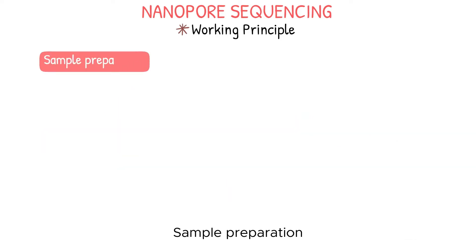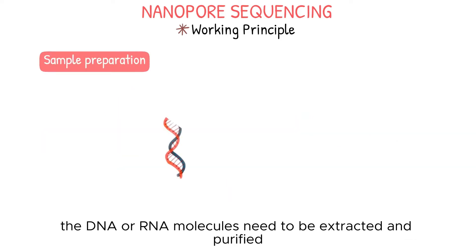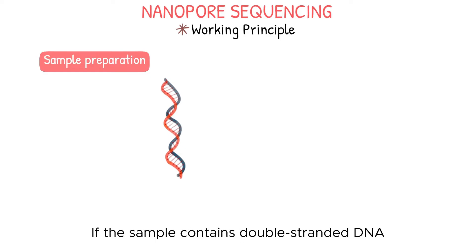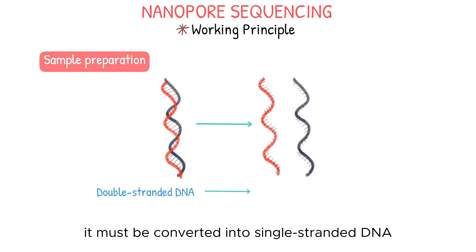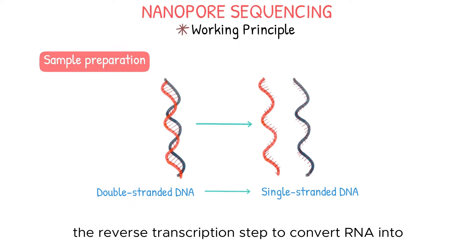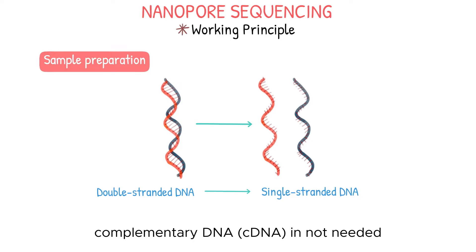Sample preparation. First, the DNA or RNA molecules need to be extracted and purified from the sample. If the sample contains double-stranded DNA, it must be converted into single-stranded DNA. For RNA samples, the reverse transcription step to convert RNA into complementary DNA, or cDNA, is not needed.